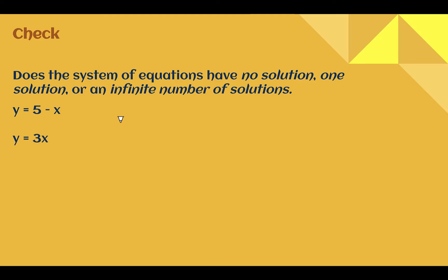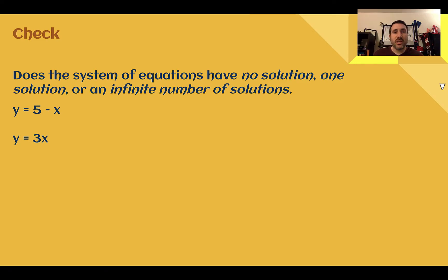Check your understanding: does this system of equations have no solution, one solution, or an infinite number of solutions? Pause the video now and complete the check. Check your answer: this has one solution. The slope here is three. The slope here is hidden in front of x at negative one. They are different slopes, so I have one solution.